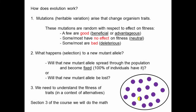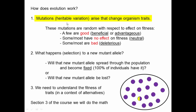Now that we know how evolution is studied, we want to spend a little bit of time thinking about how evolution actually works. The way that evolution works in populations is that you have a population of organisms and mutations, which is some of the heritable variation, and they arise and they change organism traits.